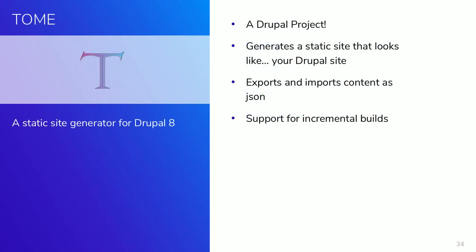The last one we're going to focus on is Tome. Tome is interesting because it's a Drupal project — a static site generator for Drupal 8. It's going to generate a static site that looks like your Drupal site, and it also exports and imports your content as JSON, so you can use it to easily move content across different environments. It supports incremental builds along with a bunch of other nice features. Samuel, who's the lead on this project, has really been putting a lot of time and effort into some cool stuff.